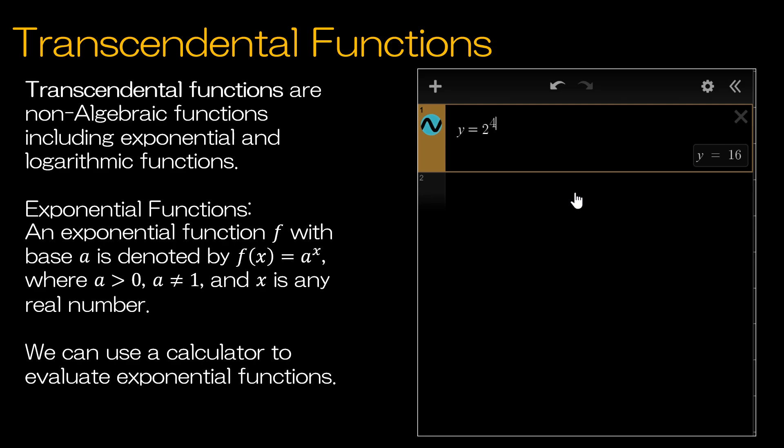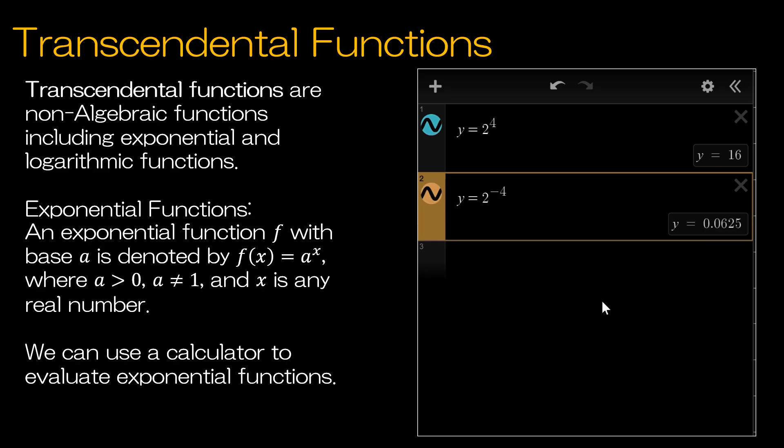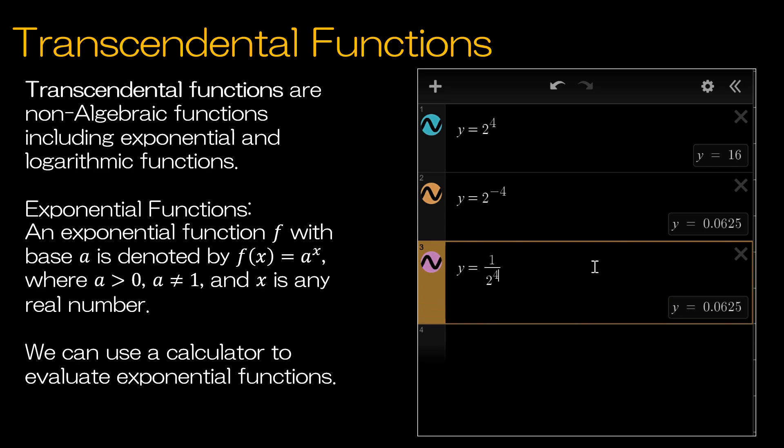So we can evaluate exponential functions when we know both the x value and the a value. Now I want you to notice 2 to the fourth, obviously this number is getting bigger than 2. The base is 2, the exponent is 4. If I said y is equal to 2 to the negative 4, this number is much smaller than 2. And in fact, it is the same as 1 divided by 2 to the fourth power. That's exactly what that negative exponent is going to do for us.